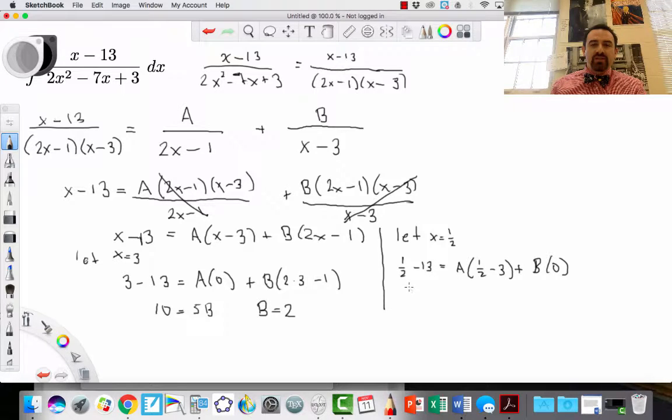So let's do a little simplification. This is 26 over 2. So I have negative 25 halves. This is 6 halves. So I have A times negative 5 halves. And B is 0. So what I'm going to do now is multiply both sides by 2 fifths. I'm going to get that A is equal to 2 over 5 times 25 over 2. So A is equal to 5. And notice we had a negative and a negative so they went away.